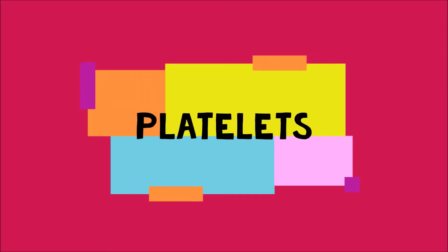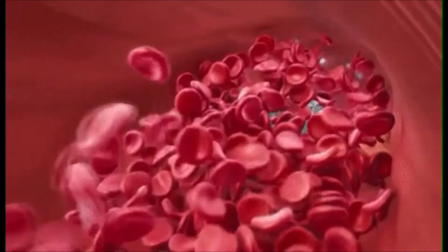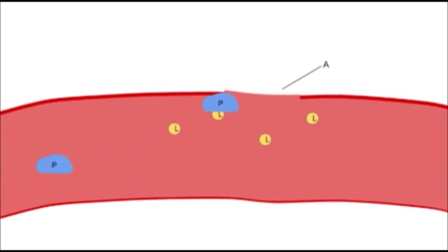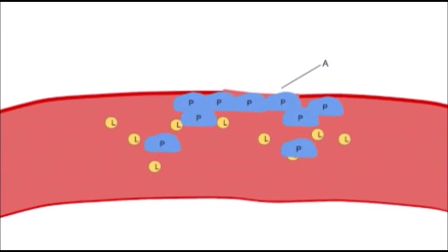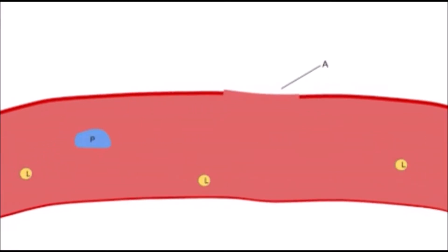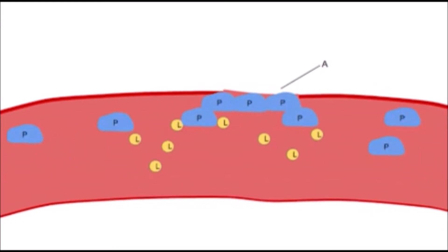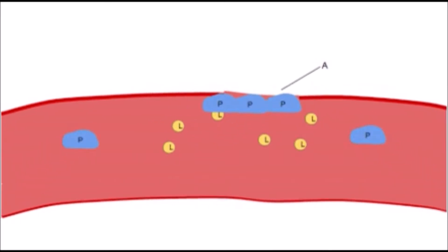Platelets, also called thrombocytes, are colorless, non-nucleated cell fragments formed in the bone marrow. They help in blood clotting or coagulation during a cut or wound. They have a lifespan of around 5 to 9 days. When tissue is wounded, it starts bleeding. If unchecked, it may cause excessive loss of blood, sometimes even leading to death. The body has a natural mechanism of preventing this by forming a blood clot. The clot contracts and solidifies, closes the injury, and results in the expulsion of a liquid called serum.